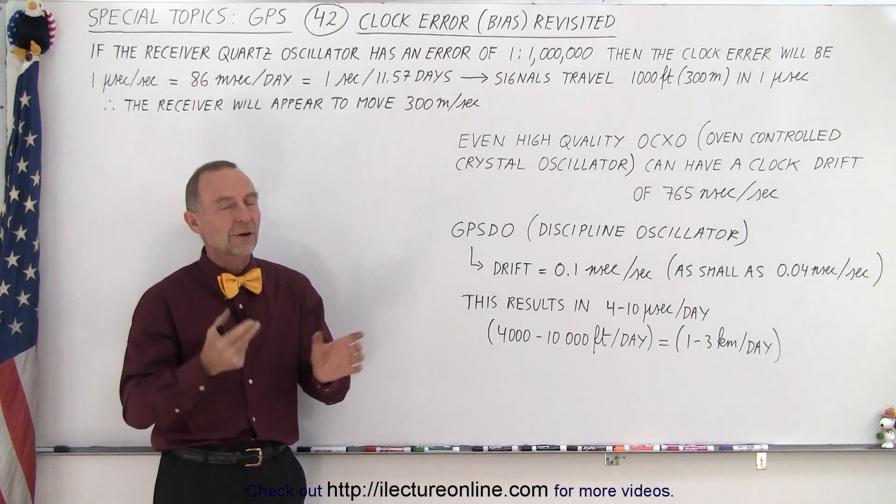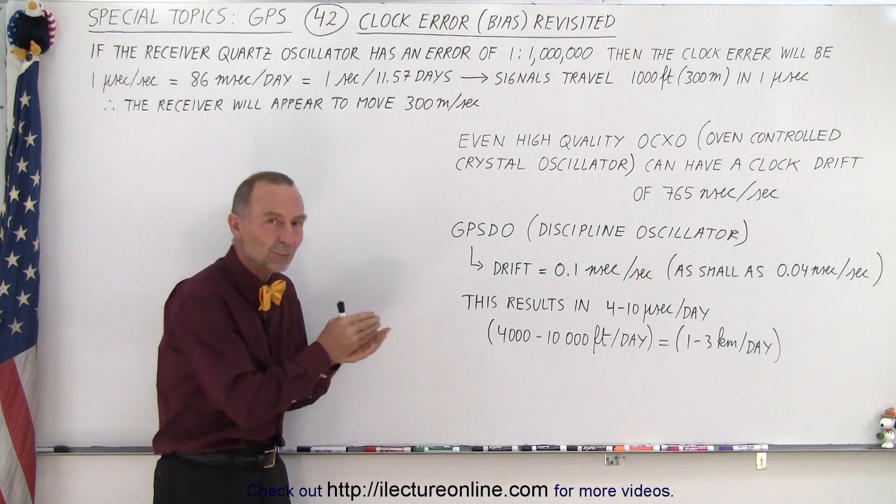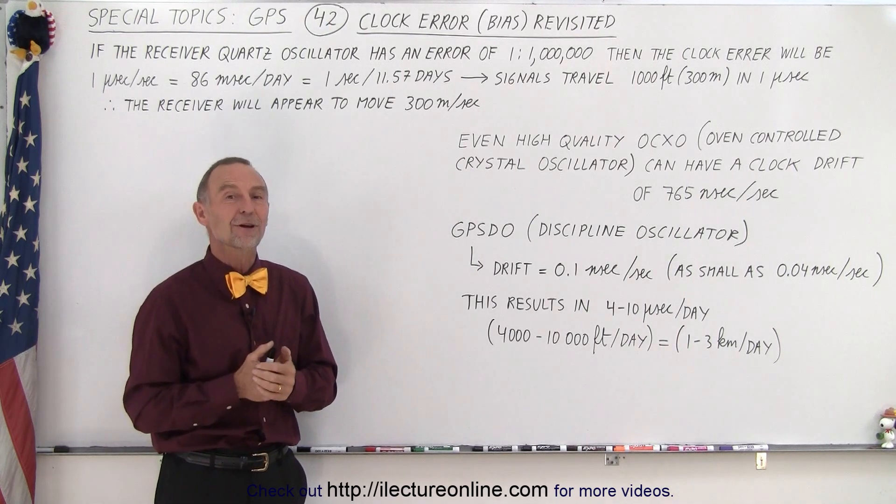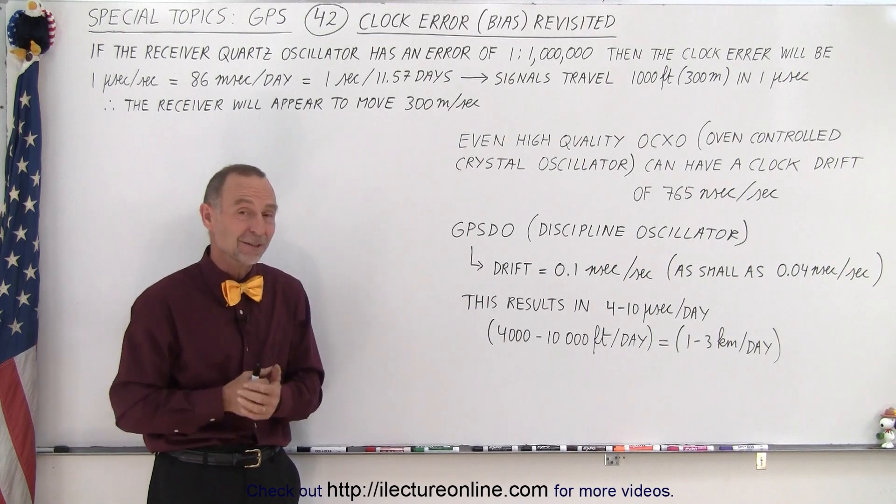So that's why when we first take pseudo ranges, that's our approximate range, and then we need to figure out what that clock error is so we can get much more accurate measurements. Otherwise, GPS wouldn't be very useful. And that is how it works.